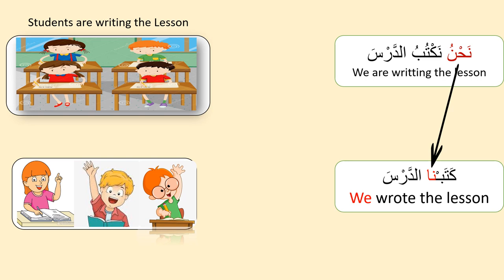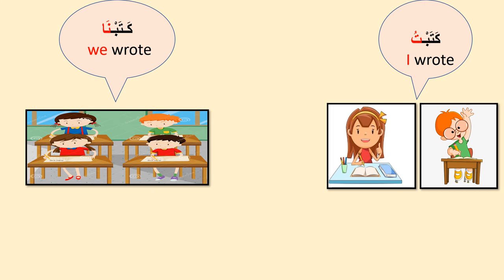Next, we can see students are saying: we are writing the lesson — Nahnu na-tubu at-darsa. How to say 'we wrote the lesson'? Katab-na at-darsa. Here we can see the attached pronoun dhamairul muttasila 'na' highlighted in red. Na means 'we'. In this slide we can see the attached pronouns tu and na: katab-tu and katab-na. Tu means 'I', used for male and female the same. Na means 'we', used for male and female the same.